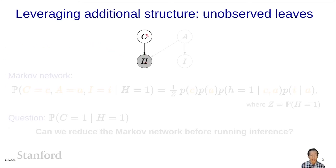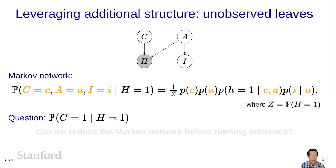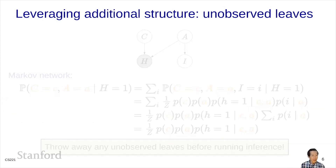Let's take another example where we condition only on h. We find a Markov network on the variables we didn't condition on, conditioned on h equals 1. This equals the product of all local conditional distributions with h substituted to 1, and the normalization constant is the probability of the evidence. Now the question is: can we reduce the Markov network before running inference? If we can make it smaller, inference can be faster.